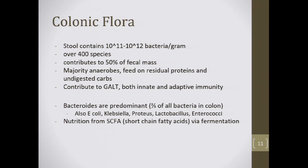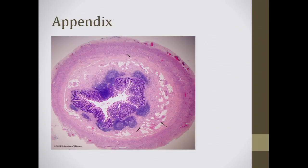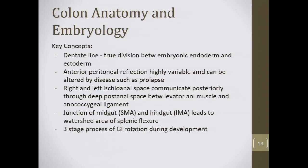Nutrition to the mucosa comes from these anaerobes via short-chain fatty acids through fermentation. Here's a slide of a normal appendix — you can see the four layers of the bowel wall, with notably more lymphocytes and immune-type cells present.